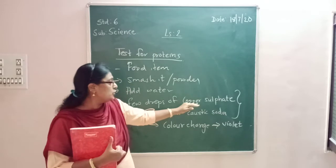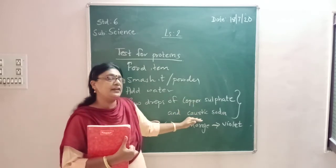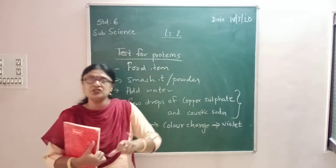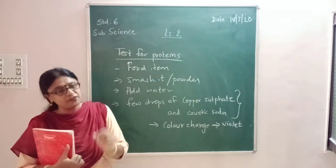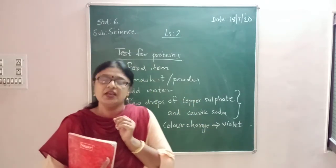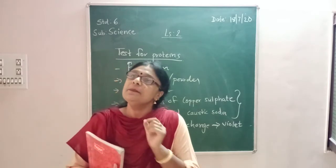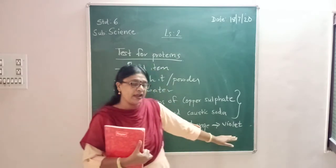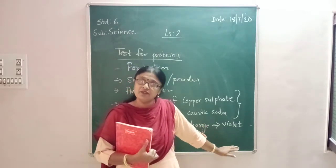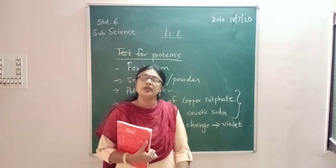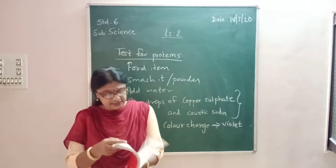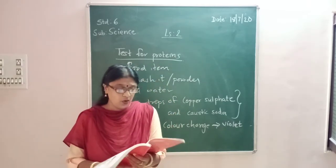So if, when you put copper sulfate and caustic soda in that test tube, the color becomes violet, then that food item contains proteins.